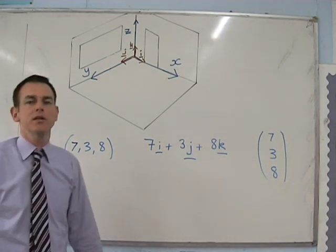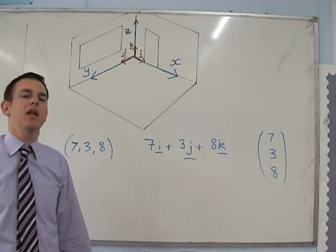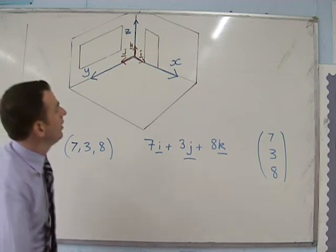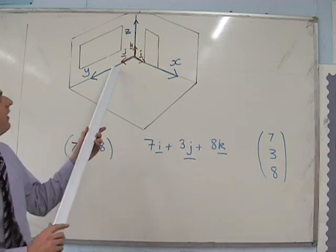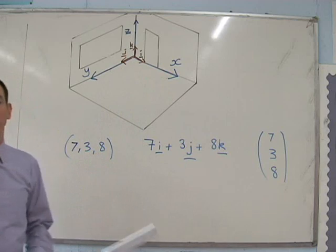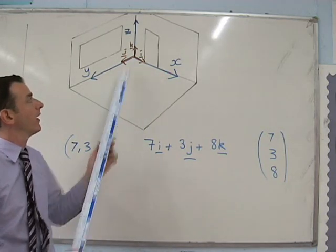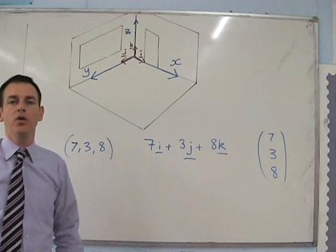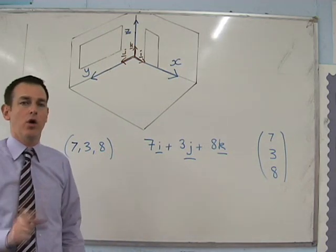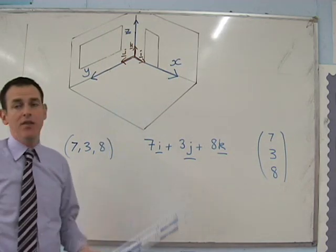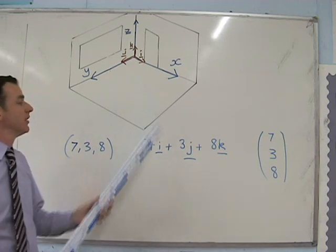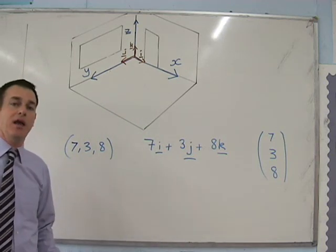As well as using coordinates we can also use position vectors to tell us where a fly is. We use i, j and k where i, j and k are all unit vectors pointing in the direction of x, y and z. A unit vector just means it's of length 1. This is nearly the same as coordinates but now we've actually got a direction as well as a place.